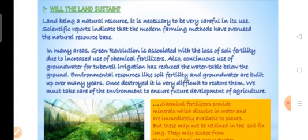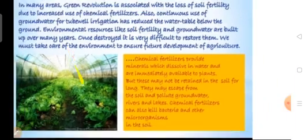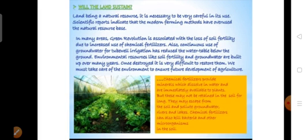Some chemicals from fertilizers dissolve in water and are immediately available to plants but may not be retained in the soil for long. They escape from the soil, pollute groundwater, and get mixed into rivers and lakes. Chemical fertilizers can also kill bacteria and microorganisms that help maintain soil fertility. We must adopt modern farming methods smartly so they do not harm the environment or soil fertility.